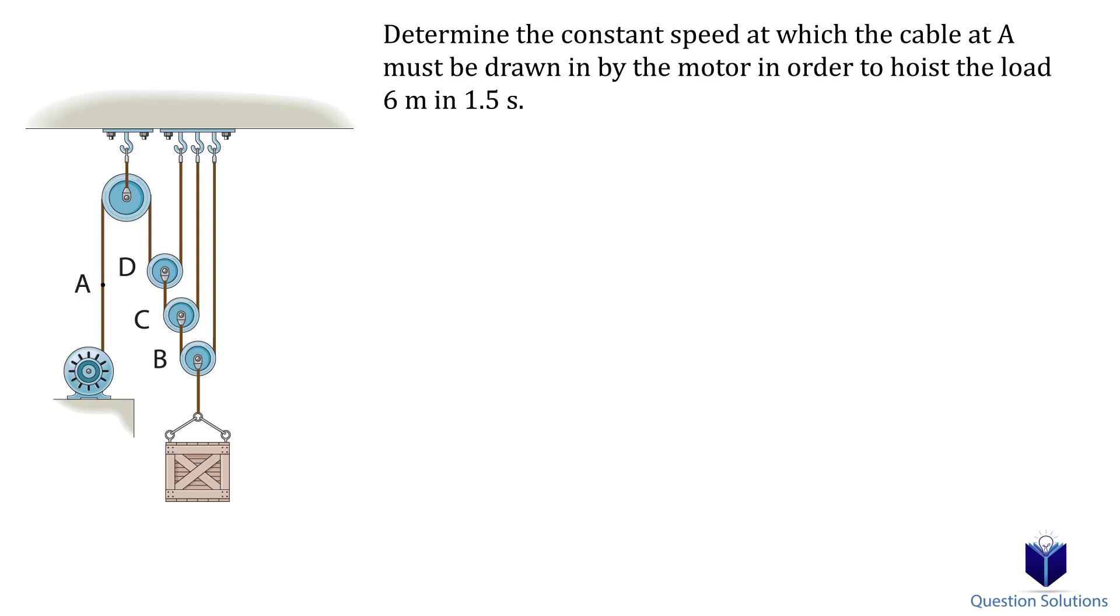In this question we need to determine the speed at which cable A must be drawn so that the crate can be lifted up 6 meters in 1.5 seconds. We can establish the datum at the top pulley. This system is made up of three cables, so we will end up with three equations.